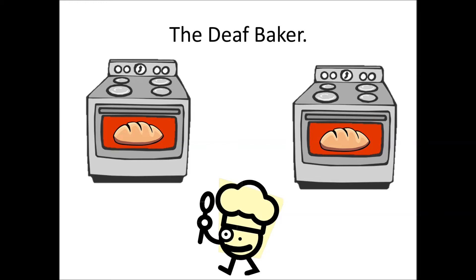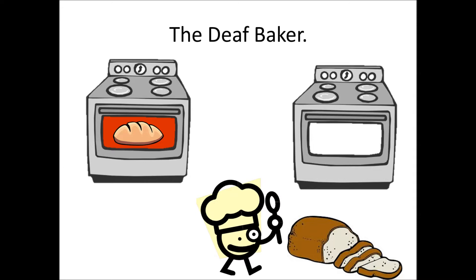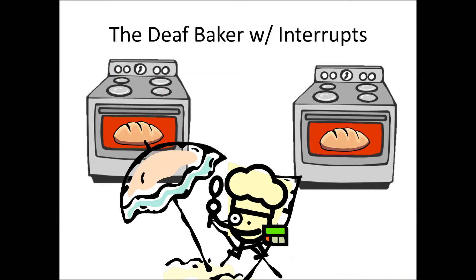Now say one of these pieces of bread becomes done. He rushes over, takes it out of the oven, and starts slicing it. Now while he's slicing it, the other piece of bread is done in the other oven. He can't hear the alarm go off. He's not checking the alarm anymore because he's slicing his bread, and ends up burning his whole house down. This is a terrible outcome — we miss the bread, we burn the bread, the bakery burns down, it's a terrible disaster. We want to try to avoid this.